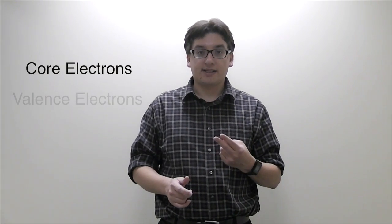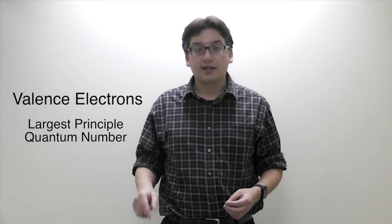Basically, you've heard the word valence electron probably a lot. You have to understand that all atoms essentially have a bunch of electrons that fall into two categories, core electrons and valence electrons. Essentially, the valence electrons are the electrons that have the largest principal quantum number in their electron configuration.